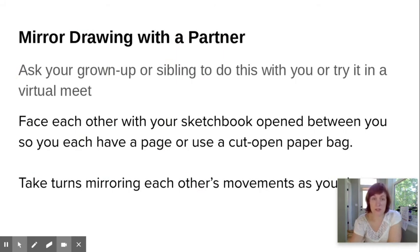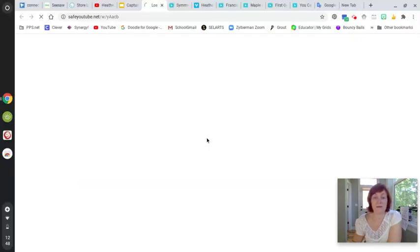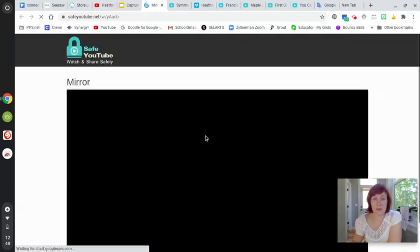So there's another way you can do this with mirroring a partner. You might be so lucky as to have a brother, sister, or a grown-up willing to do this with you. Let's see what it might look like. You could open up a grocery bag, or you could find an old piece of cardboard, or you might have a giant notebook like these people do.